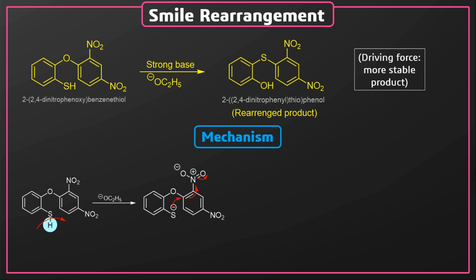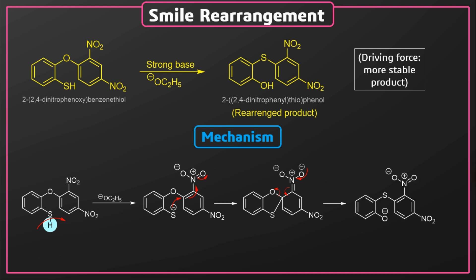As a result, the double bond moves to nitrogen and such an intermediate is formed. Here the aromaticity of benzene is lost. To re-establish aromaticity in the benzene ring, the negative charge on the oxygen atom moves to nitrogen, and the double bond between carbon and nitrogen simultaneously moves to benzene. The weaker bond — that is, carbon-oxygen — breaks and the rearranged product is formed.